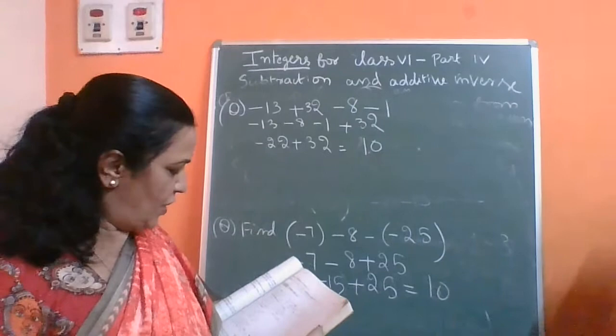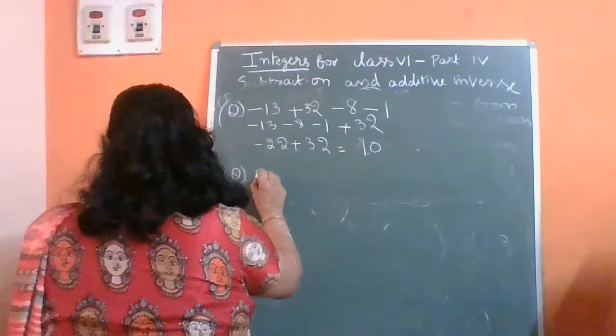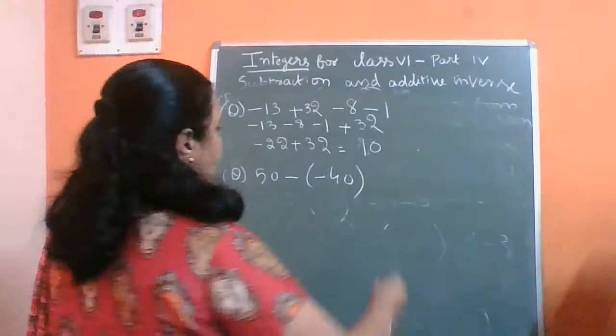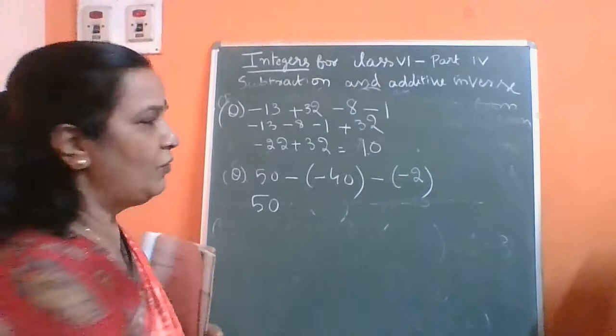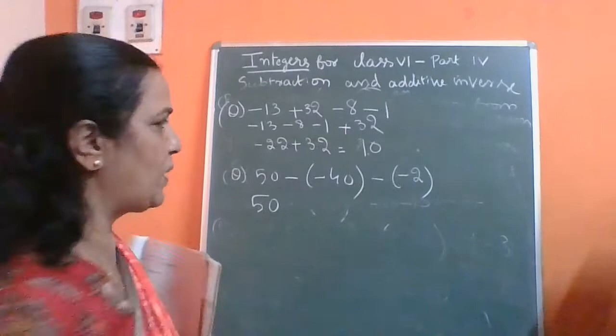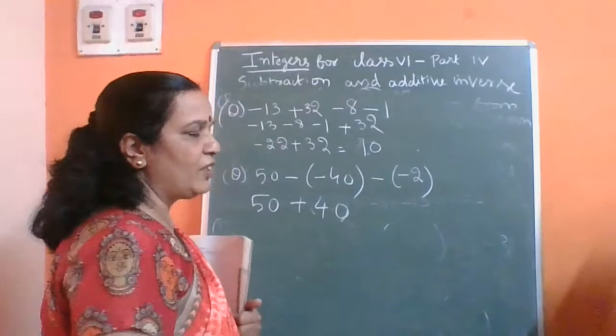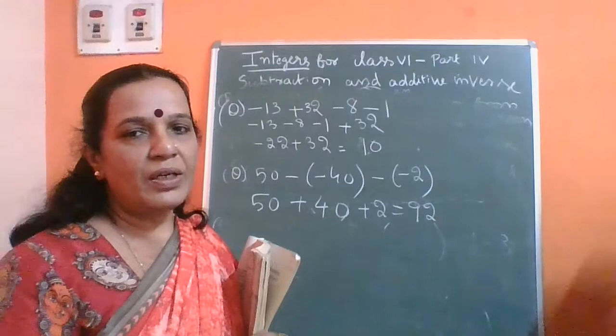Similarly, one more question from the textbook: 50 minus of minus 40 and minus of minus 2. Write 50 as it is. The additive inverse of minus 40 is plus 40, and the additive inverse of minus 2 is plus 2. So it becomes 50 plus 40 plus 2, therefore the answer is 92.